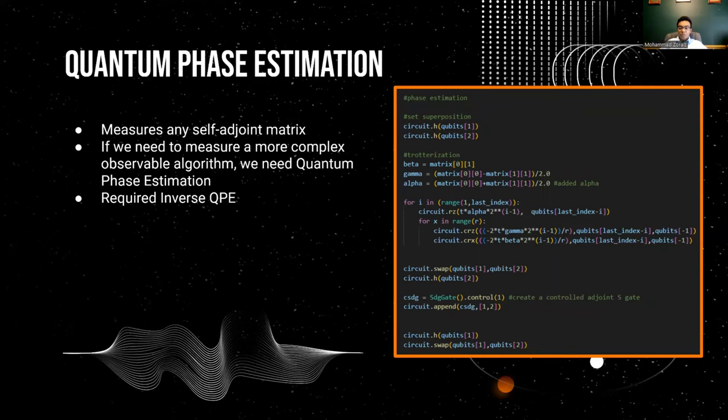Quantum phase estimation. QPE helps us to measure any self-adjoint matrix. Quantum computers permit us to measure individual qubits, but if we need to measure a more complex observable algorithm, we have to use quantum phase estimation. Inverse QPE is required after doing QPE inside of an algorithm in order to measure a qubit.